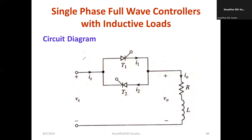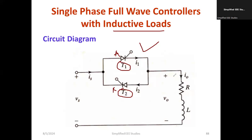Now I will show you the circuit diagram of single phase full wave controllers with inductive load. We have a single phase full wave controller using two control devices. Thyristor 1 and thyristor 2 are connected anti-parallel, also called inverse parallel — the anode of thyristor 1 is connected to the cathode of thyristor 2 and vice versa. The output is applied to the RL inductive load. The value of resistance R in the inductive load is negligibly small.